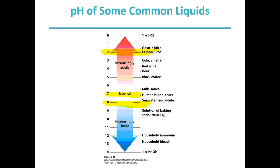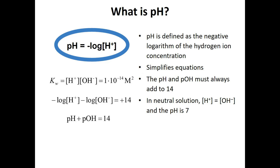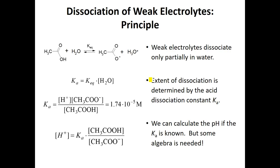We can do math with these numbers. If we know the concentration of protons or hydroxide ions, we can use the logarithmic scale to determine pH, or vice versa — if we know the pH, we can calculate the proton concentration. Rather than just looking at pure water, we're going to pay more attention to buffers and the dissociation of weak acids.